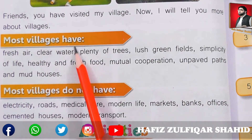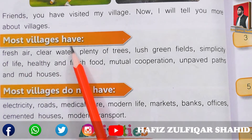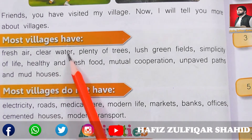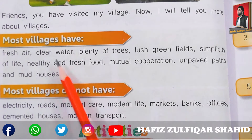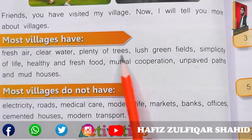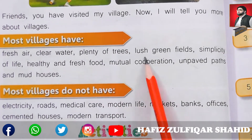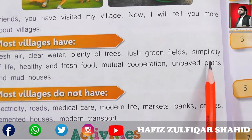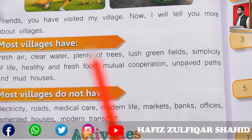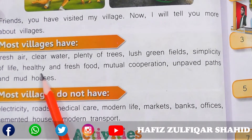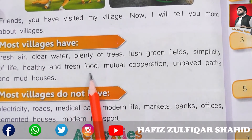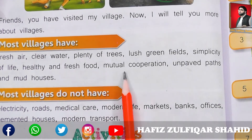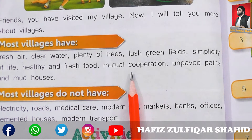Most villages have: fresh air — taza hawa; clear water — saaf paani; plenty of trees — bahut zyada darakht; lush green fields — sarsabz khet; simplicity of life — saada zindagi; healthy and fresh food — sehatmand aur taza khana; mutual cooperation — bahmi tawun.